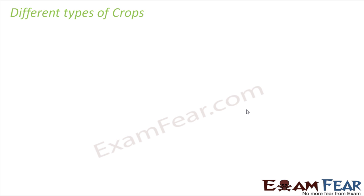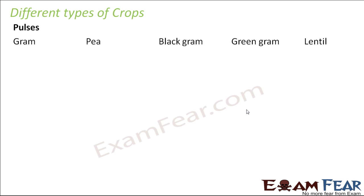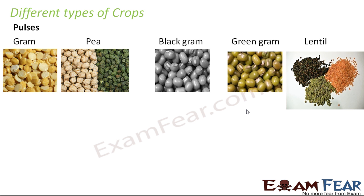Now we will talk about the different types of crops. There are many different types of crops which are being cultivated. For example, pulses also fall under the category of crop — like gram, pea, black gram, green gram, lentils. You would have seen all these stored in boxes inside your kitchen because we eat all of them in different forms, maybe in the form of chole or maybe in the form of dal. There are many different ways we eat each of these, but they all form pulses.